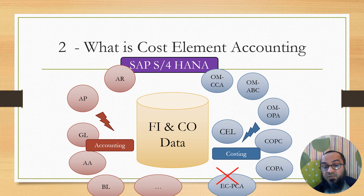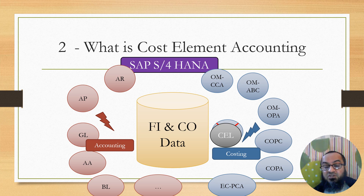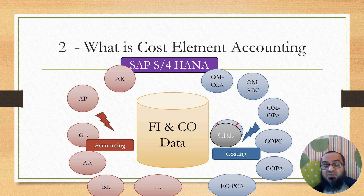Logically, since the dataset is now the same, there is no need for cost element accounting to bridge two separate datasets, and there is no need for reconciliation either. However, cost element accounting is still present in the Easy Access menu and Fiori apps, now serving only the purpose of legacy compatibility. The vocabulary SAP used in earlier versions is still used in the combined version. For example, a cost element is now the same as a GL account or expense account, but SAP still uses terms like cost element category to remain compatible with prior versions.